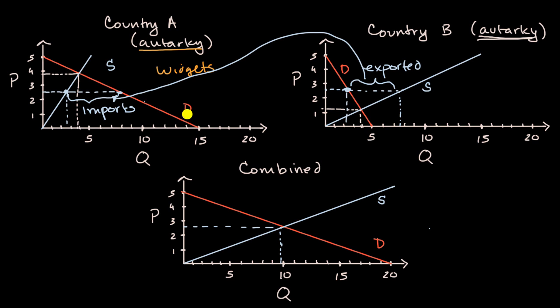Proponents of free trade will say the overall consumer surplus is larger than the combined consumer surpluses that we had before. Before you had this consumer surplus in Country A, and in Country B it was all of this. But this entire area is larger than these two combined. You could calculate the area of these triangles mathematically. And if you look at the producer surplus, you'll see a similar story. The total producer surplus of the combined economies now is going to be larger than this producer surplus plus this producer surplus.